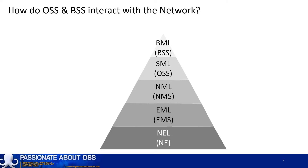The Network Element Layer represents the network devices themselves that the customer services traverse. This isn't officially shown in the TMN pyramid, but is a helpful view of the actual network layer — these are the physical devices. There's also a sixth but really important layer not shown in the diagram: the physical layer, which represents the connectivity between devices, including cables, joints, patch panels, patch leads, and many other things.